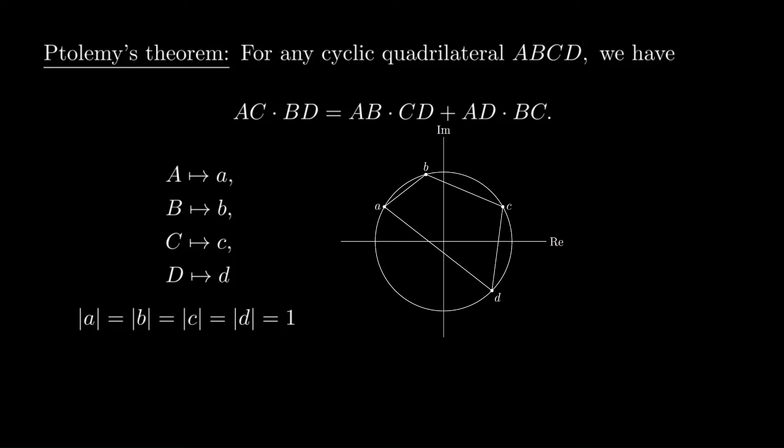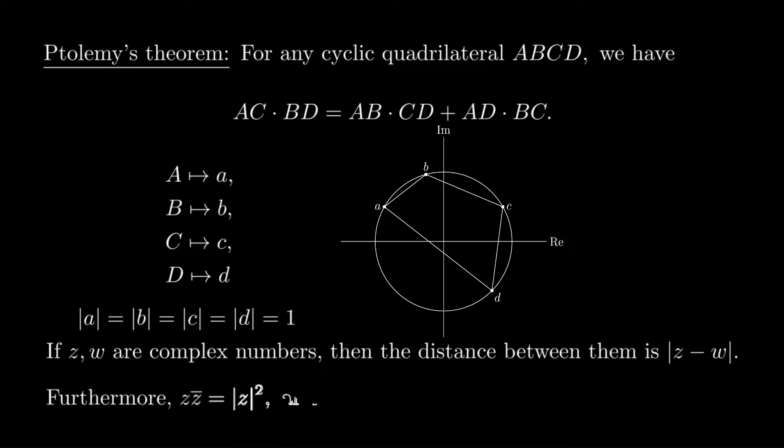There are a few facts about complex numbers that we'll need here. One of the basic facts we'll need is that if we take any two complex numbers, z and w, then the distance between them is just the absolute value of the difference. One other key property is that if we take a complex number and multiply it by its conjugate, we always get the square of the absolute value. In particular, if we start with a complex number whose absolute value is one, meaning it's on the unit circle, its conjugate is equal to its reciprocal, because we get z z-bar equals one. These are really the only facts about complex numbers that we'll need for the proof.